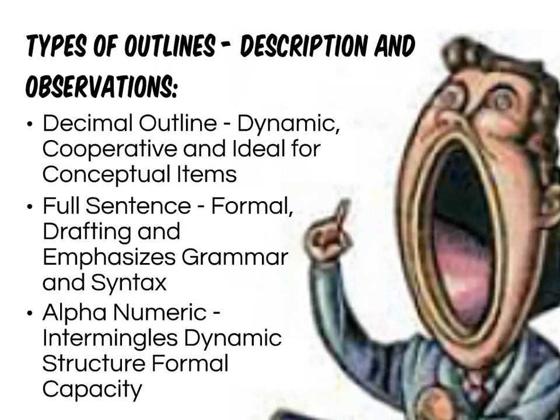So what are the three main types of outlines you're likely to use? Typically most outlines fall into three patterns: decimal or bullet point outlines, full sentence outlines, or alphanumeric outlines. Decimal outlines are probably the sorts of outlines you may have already used intuitively. They're just a series of bullet points, and that can be good or bad. It's good because decimal outlines tend to be dynamic, easily assembled, and ideal for conceptual items that all relate to your speech topic.